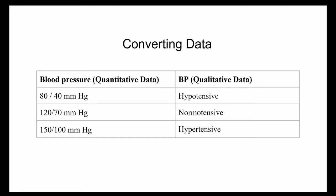Data transformation refers to the conversion of the value of a given data point using numerics and characters. Quantitative data is identified as numerics and qualitative data is identified as characters. For example, blood pressure described in numbers can be transformed using cut-off points into qualitative data, resulting in a much more informative form of data.